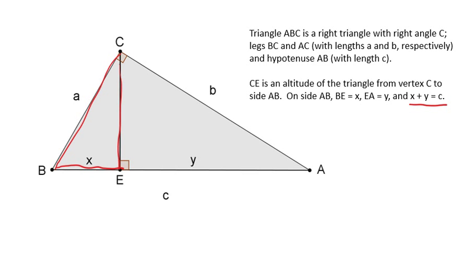Now let's first focus on triangle ABC, the whole triangle, and triangle CEA. Notice that CEA and ABC each contain a right angle, and both triangles contain angle A. So by the angle-angle theorem, we know that triangle BCA is similar to triangle CEA.